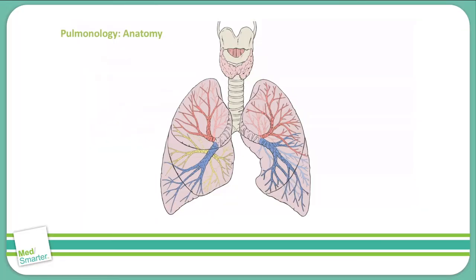Let's look just a little closer at the gross anatomy of the lungs. The lungs have two sides, the right side and the left side. The right lung is made up of three lobes: the superior, the middle, and the inferior lobe. The left side is made up of two lobes, the superior and inferior.